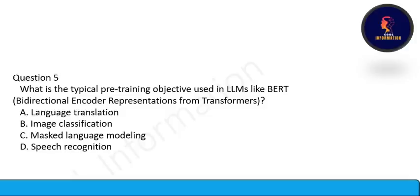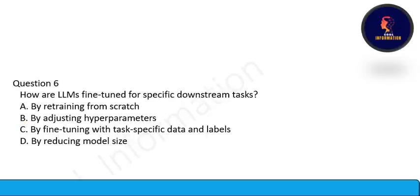Next question: What is the typical pre-training objective used in LLMs like BERT (Bidirectional Encoder Representations from Transformers) — is it language translation, image classification, masked language modeling, or speech recognition? Option C is correct: masked language modeling. Next: How are LLMs fine-tuned for specific downstream tasks? They are fine-tuned with task data and labels. Option C is correct.